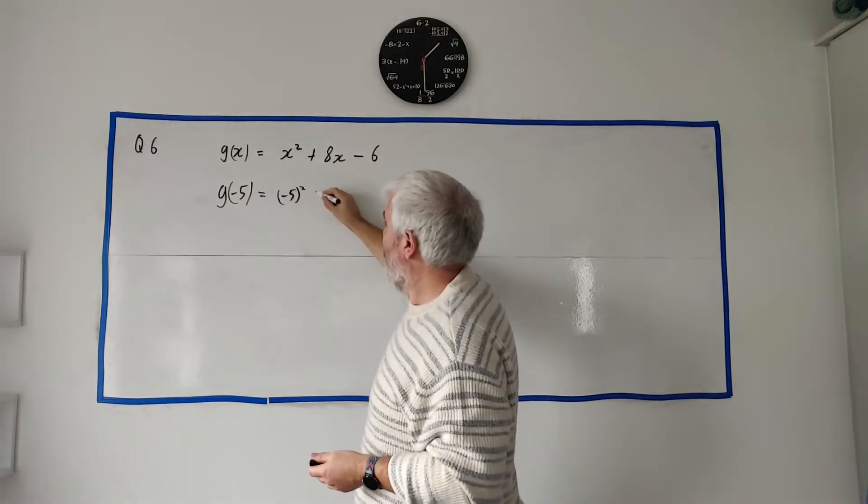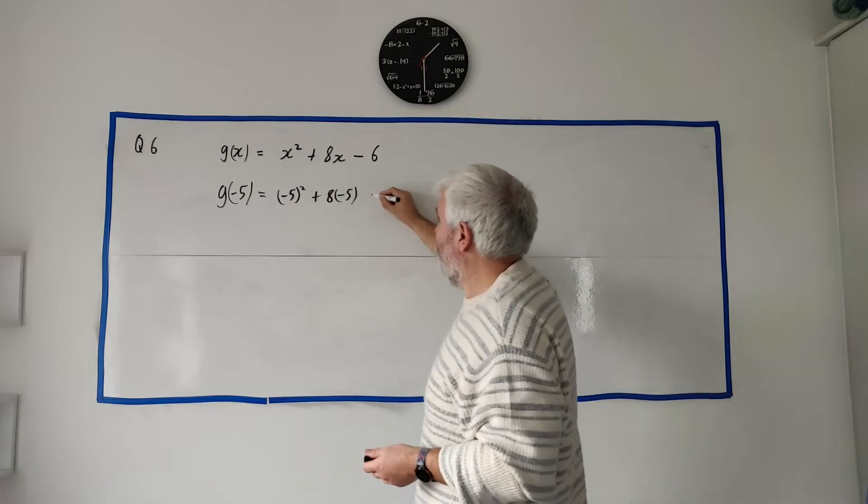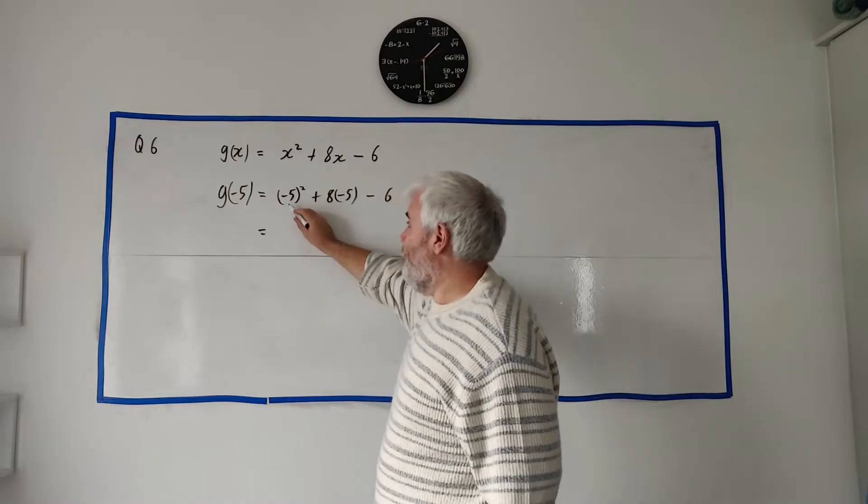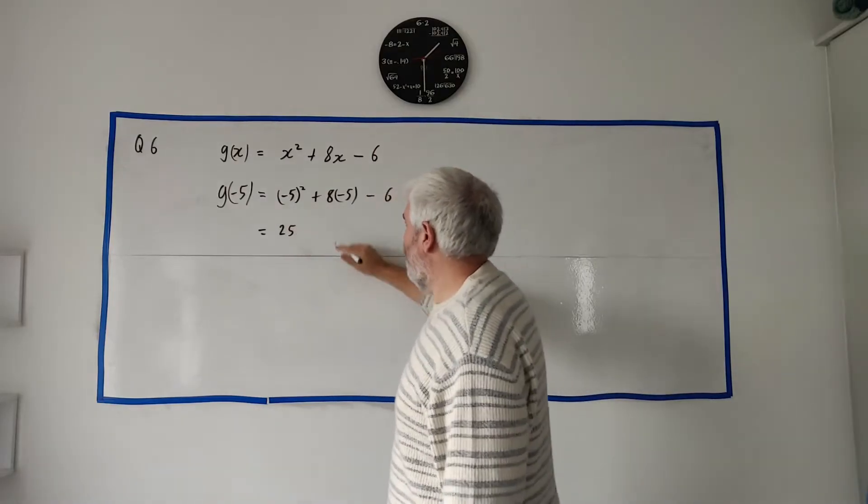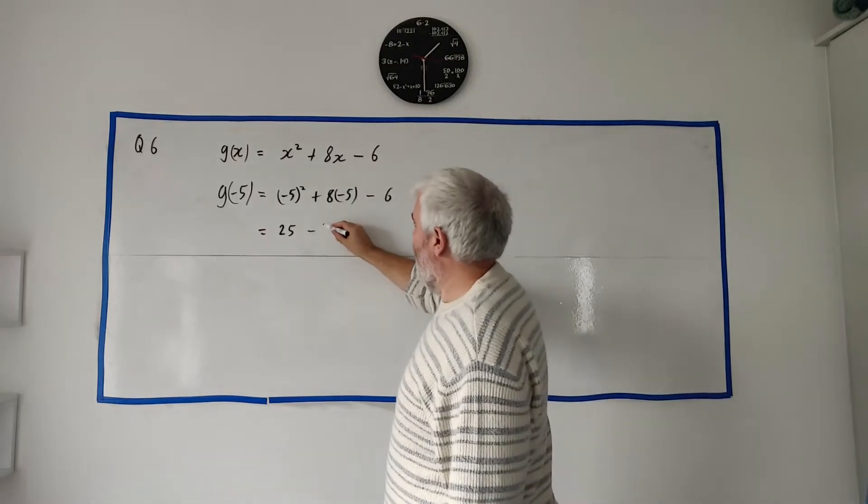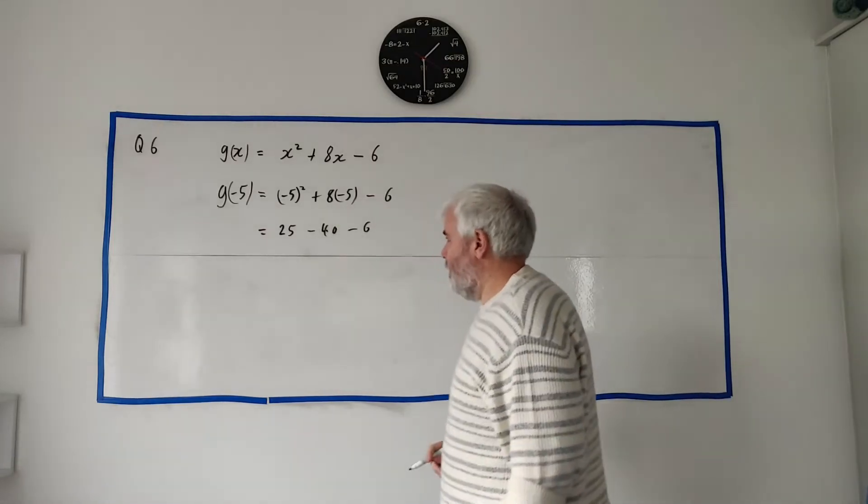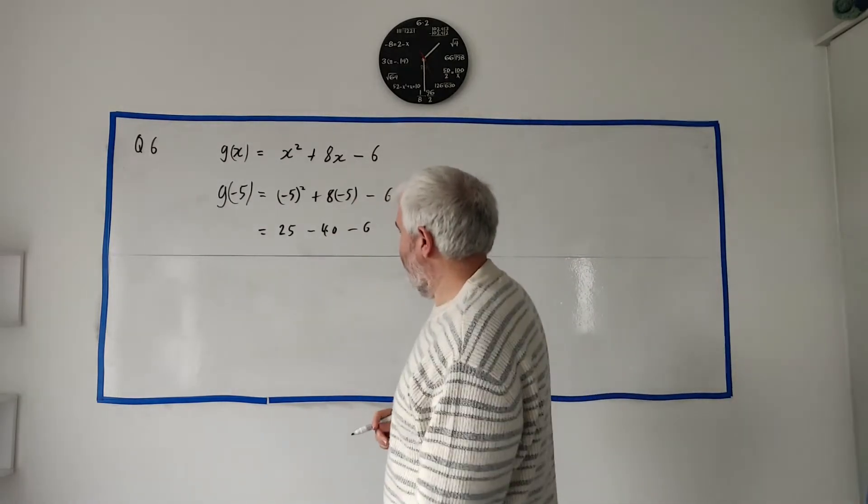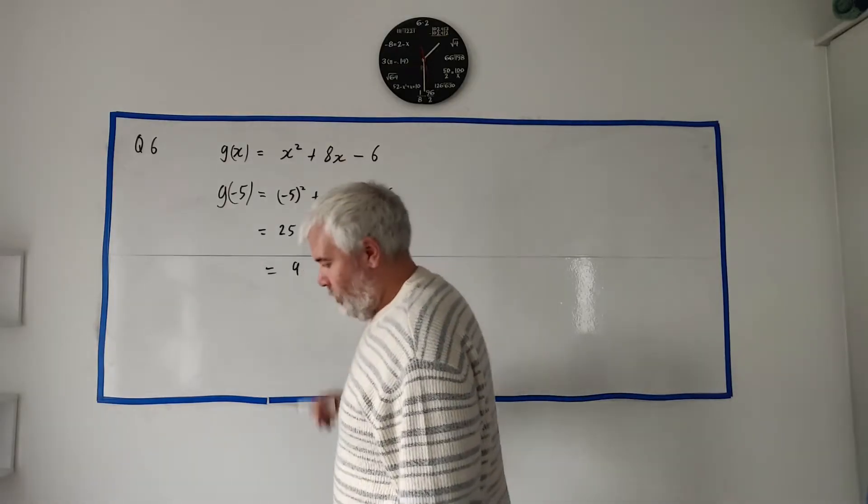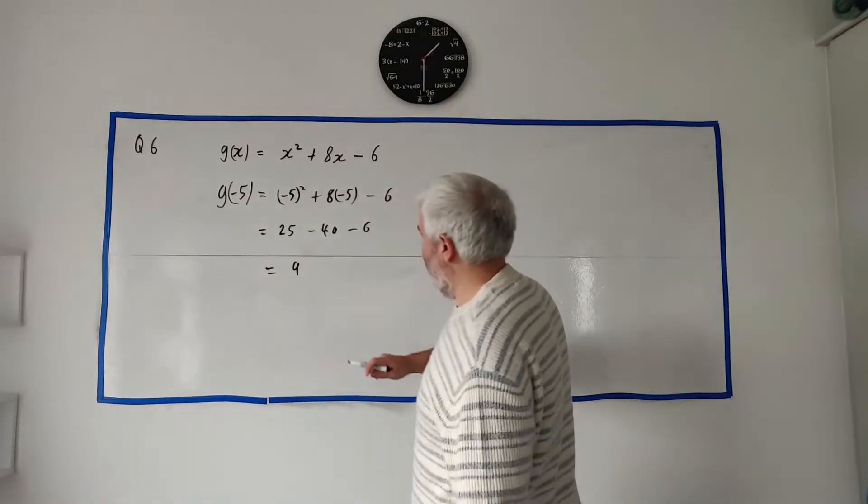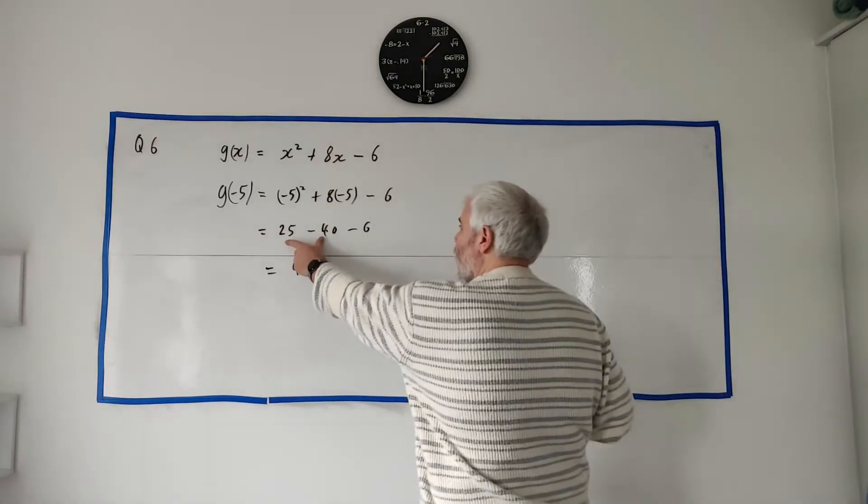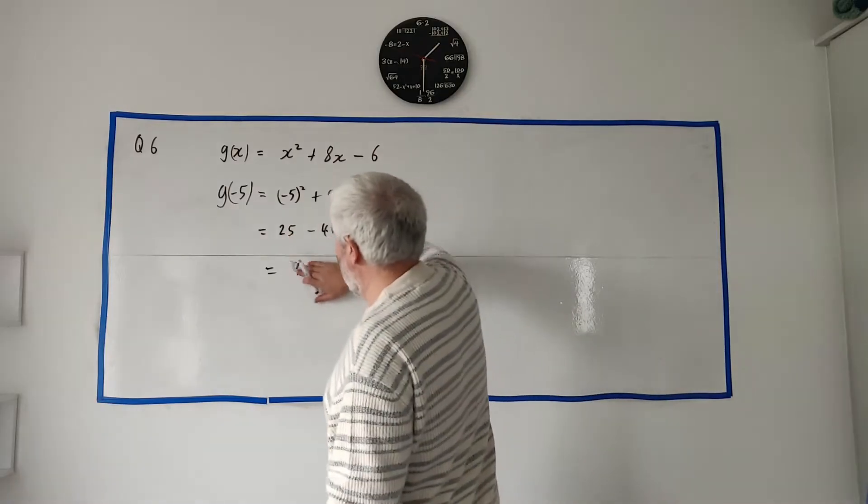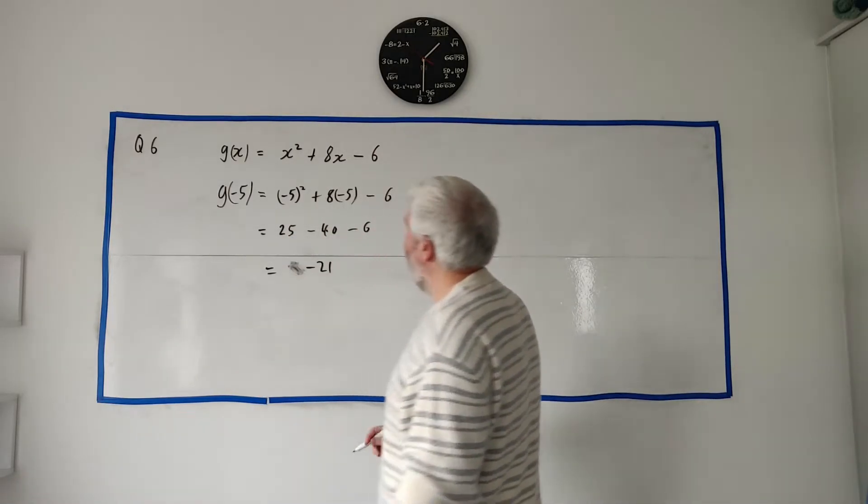So -5 squared plus 8 multiplied by -5 minus 6. And we just clean this up. -5 multiplied by -5 is plus 25, and plus 8 by -5 is -40, and -6. Again, clean this up. Ah no, that is a mistake. It's actually -21 of course. This is -15 minus another 6 is -21. Apologies.